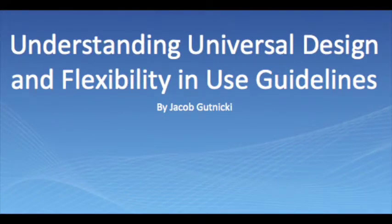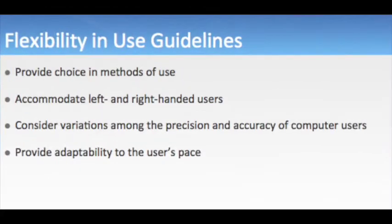Let us begin with a review of Universal Design and Flexibility in Use Guidelines, which are as follows: 1. Provide choice in methods of use. 2. Accommodate left and right hand users. 3. Consider variations among the precision and accuracy of computer users. 4. Provide adaptability to the user's pace.